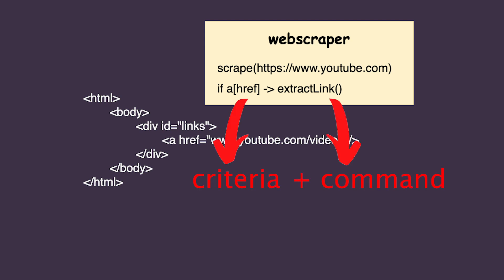When we want to build our scraper, the first thing we need to do is create a new collector. The NewCollector function accepts a list of options that we can pass to it. We will be passing the AllowedDomains option, which tells the collector which domains it is allowed to scrape. Using the collector's Visit function, we can tell it to visit a specific URL. The final thing we need to tell our collector is what criteria to watch out for and how to behave if the criteria is met.